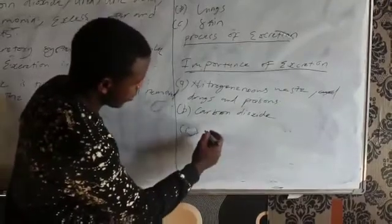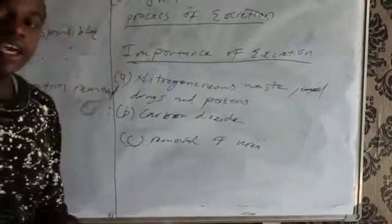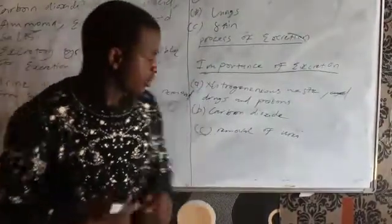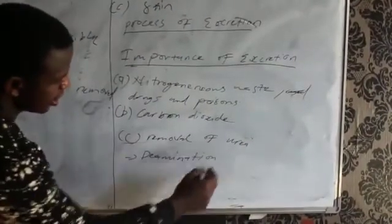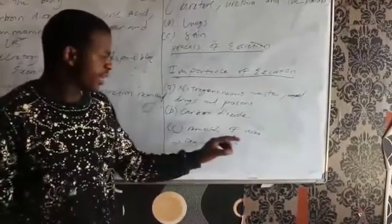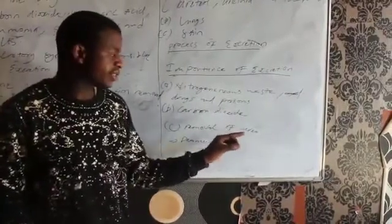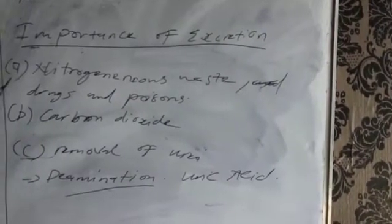Next is the removal of urea. Urea is formed from excess amino acids during the process of deamination. If urea is left to accumulate in the body, it dissolves in water and forms uric acid, which changes the pH of the cells, causing the cells and the whole organism to die.